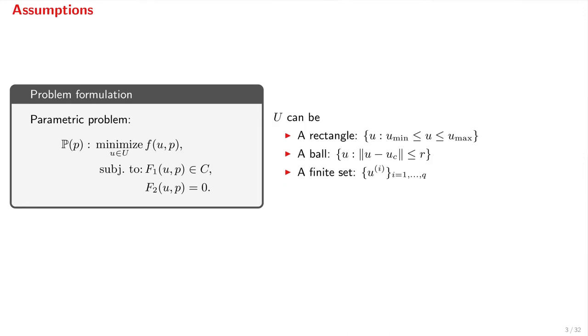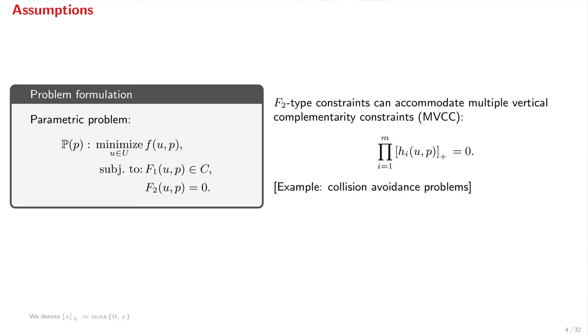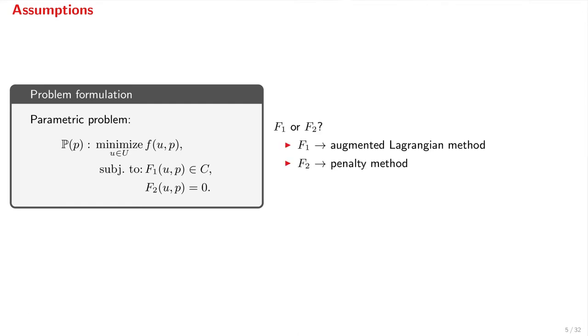C is a convex set whose distance function is easy to compute. U is a set on which it is easy to project. For example, it can be a rectangle, a ball, a finite set, or even a Cartesian product of such sets. F2 type constraints can accommodate multiple vertical complementarity constraints, that is, constraints of this form,